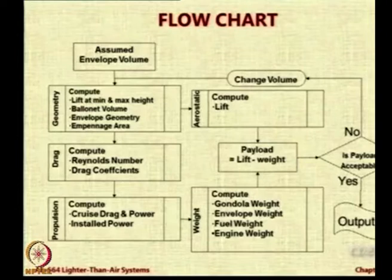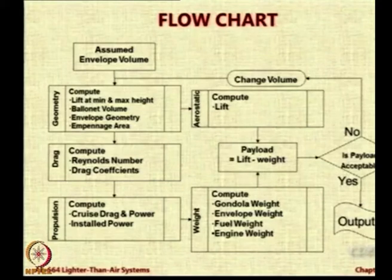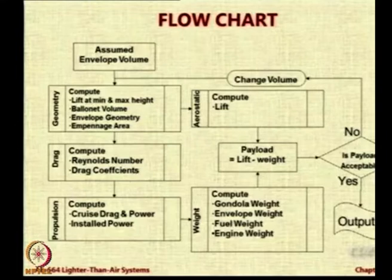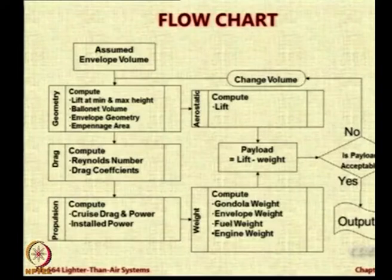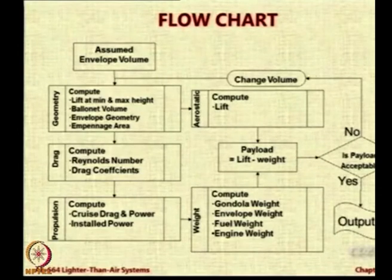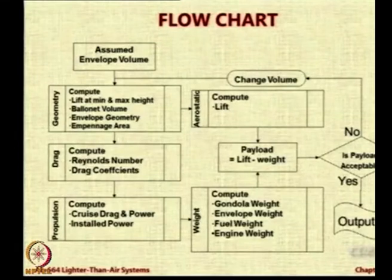As always in research, we have published a paper based on this methodology — I will show that to you. You can help me enhance it and get a much better publication. Once we have drag coefficient, we calculate the power required, which will be simply drag times velocity cubed, and with that you will get how much power needs to be generated. Let us say 100 horsepower — then you add to that the percentage needed by the onboard systems and you will get an idea about what engine you have to incorporate in this airship.